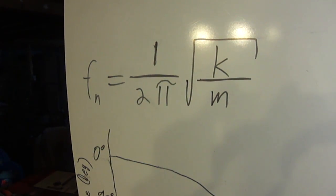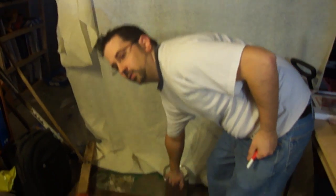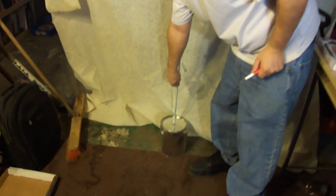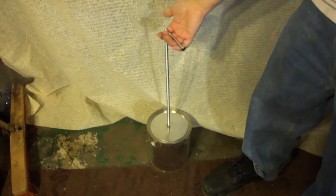So through much trial and error I finally came up with the model that I'm going to demonstrate. That is a gallon paint bucket filled with cement attached to a door spring which is attached to a bolt which I use as a handle.